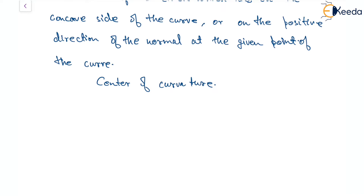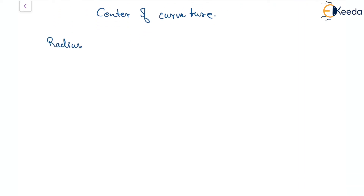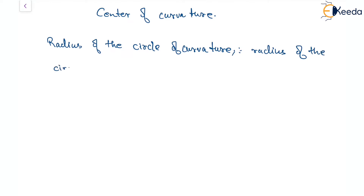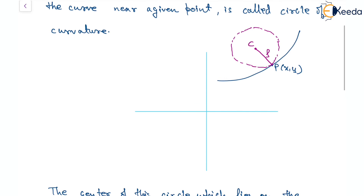The third thing is the radius of curvature, specifically the radius of the circle of curvature. This is something we have already learned about for Cartesian and polar coordinates. This radius of curvature is the radius of the circle we just found. It is generally denoted by rho. With C as the center, denoted x-bar, y-bar, and P the point on the curve, the distance CP is the radius of the circle of curvature.